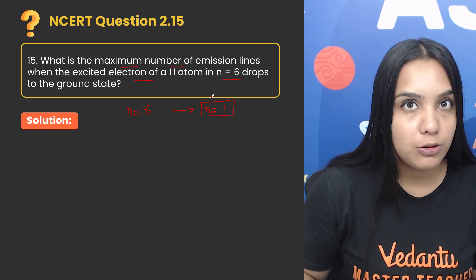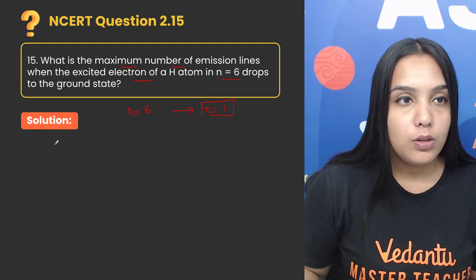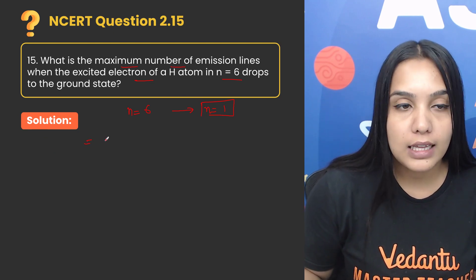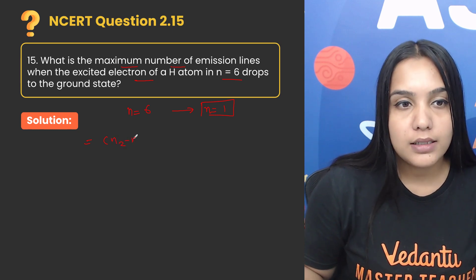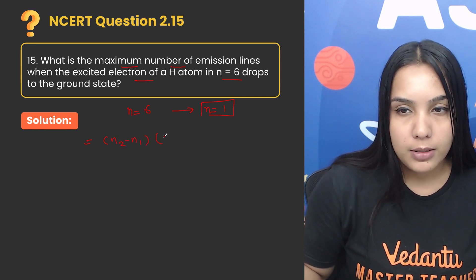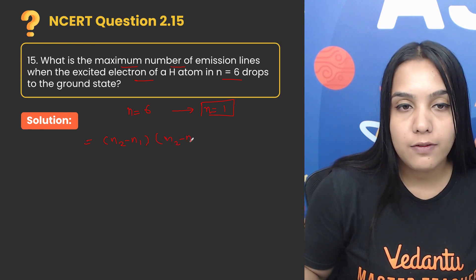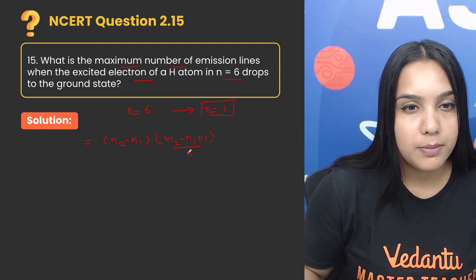So to calculate the number of lines of emission, what is the formula? The formula is n2 minus n1, multiplied by n2 minus n1 plus 1, divided by 2.